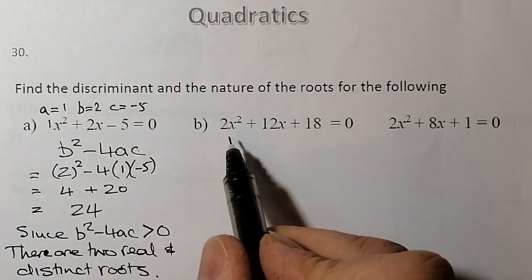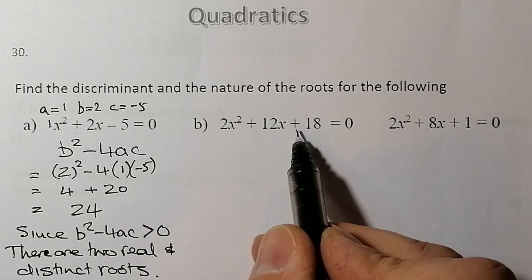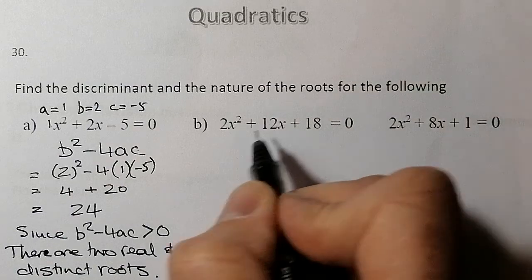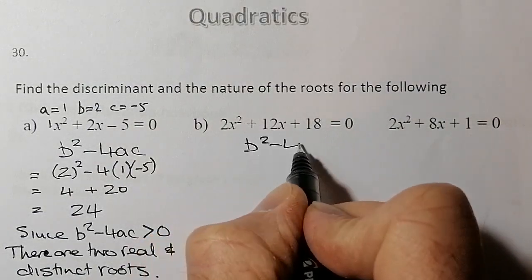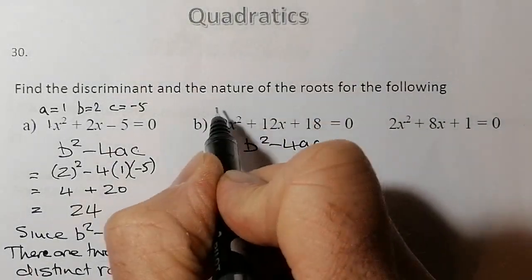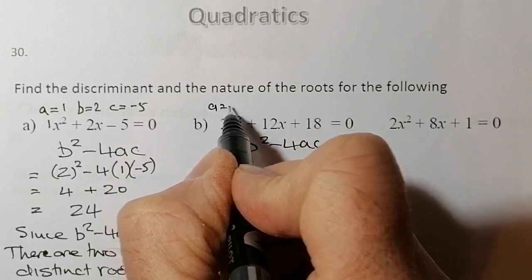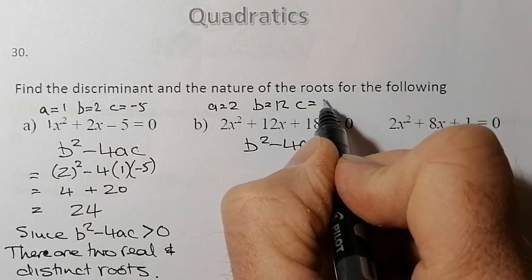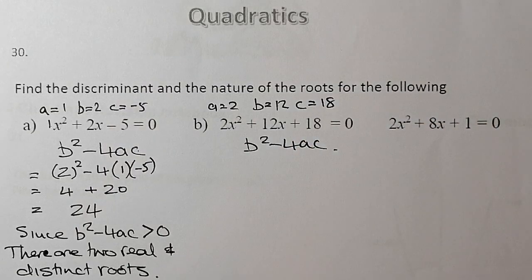Another quadratic here, we've got 2x² + 12x + 18 = 0. So what we'll do is we'll start the same thing off. We're going to go for b² - 4ac. I'll identify what a is, a = 2, b = positive 12, and c is a positive number, that's going to be 18.